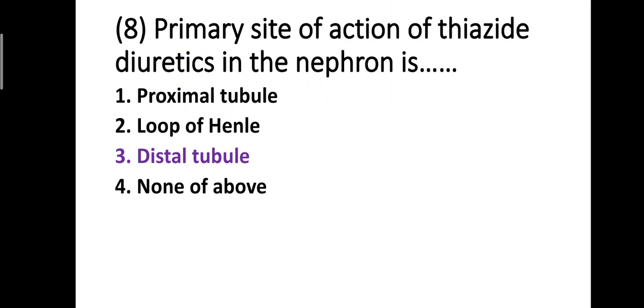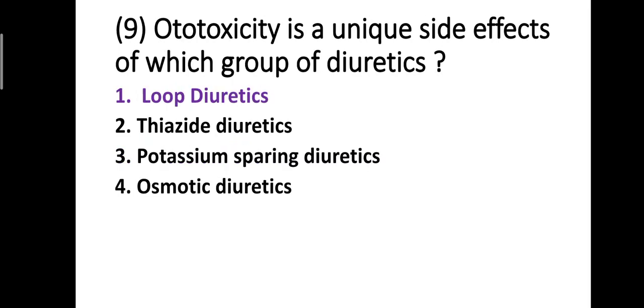Question number eight: the primary site of action of thiazide diuretics in the nephron is — option one: proximal tubule, option two: loop of Henle, option three: distal tubule, option four: none of the above. The correct answer is option three — the primary site of action of thiazide diuretics is the distal tubule.